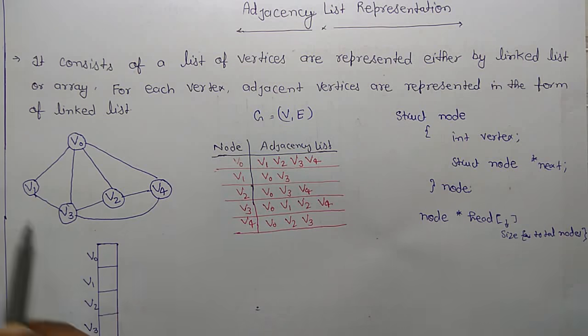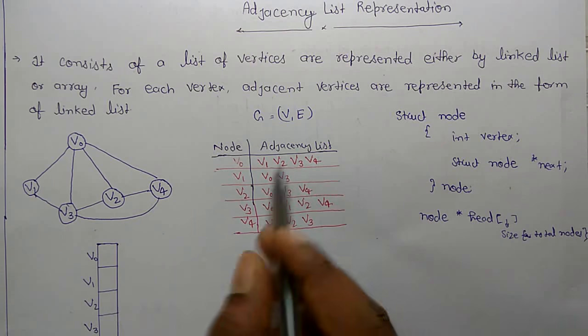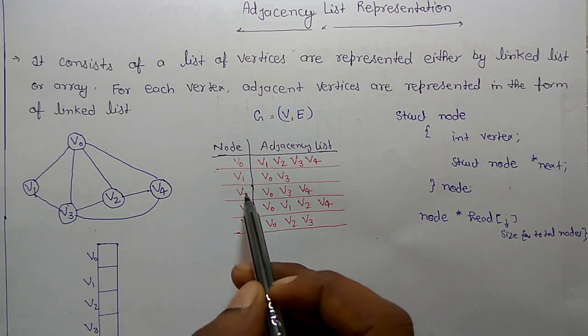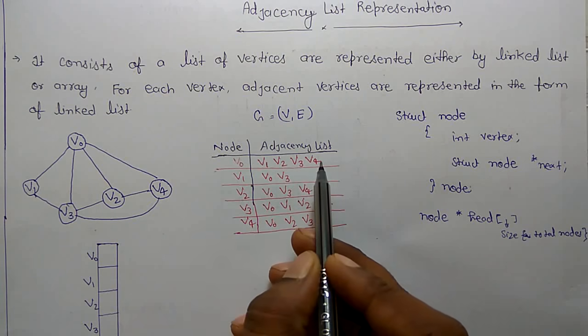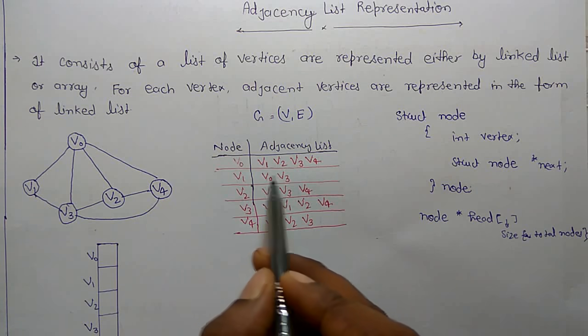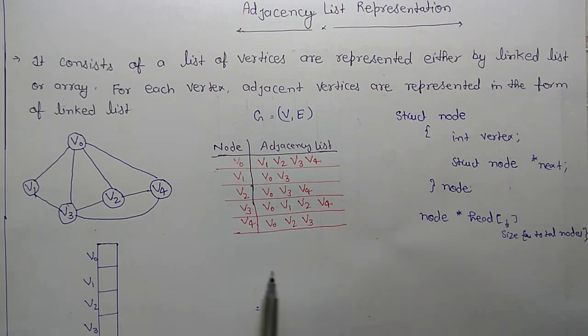These are the vertices. If we find the adjacent list: V0, V1, V2, V3, V4. V0 has V1, V2, V3, V4 in its adjacent list. V1 has V0, V3 and so on.